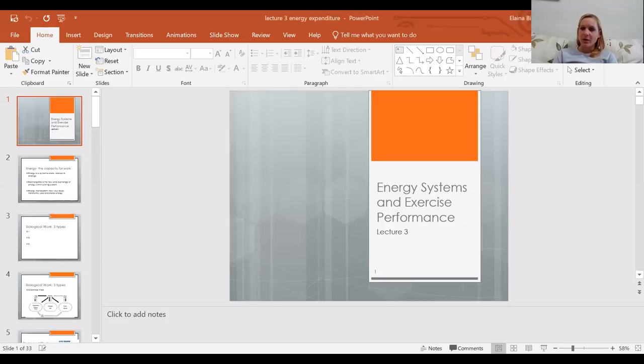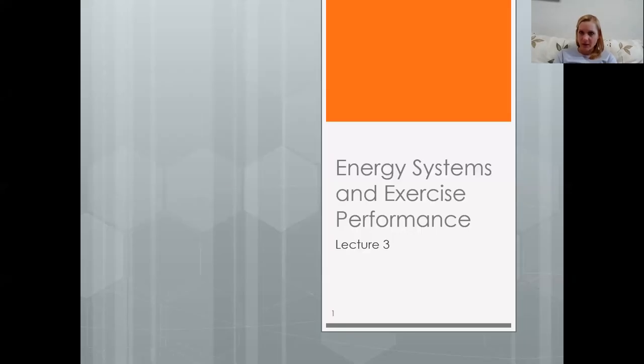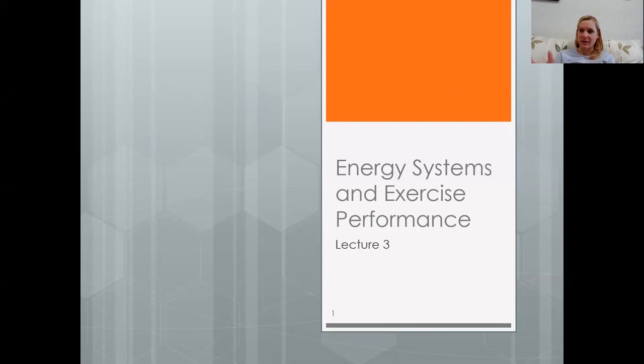In last week's unit we talked about energy metabolism and the three energy systems associated with energy metabolism. Now we're going to apply that information and look at how we expend energy, the various components of energy expenditure, and some of those factors. In this unit we're going to be talking about energy systems and how they relate to exercise performance.